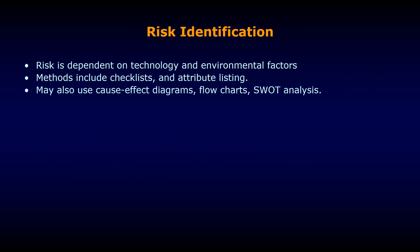Risk identification involves identifying the different risk factors associated with a project. We can apply different methods such as a checklist method or attribute listing — preparing a list of all risk factors associated with the project. We can also conduct a cause-and-effect diagram to find different causes and factors that can affect project activities. We can use flowcharts, or we can also do SWOT analysis. SWOT stands for Strengths, Weaknesses, Opportunities, and Threats associated with a project.